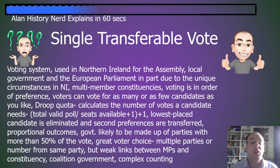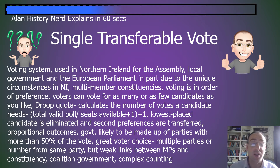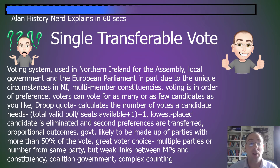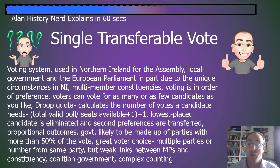The winning of seats is calculated using the droop quota. This calculates the number of votes a candidate needs. It is the total of valid poll votes divided by the seats available plus one, and then you add one to that sum, which gives you the number of votes you need.